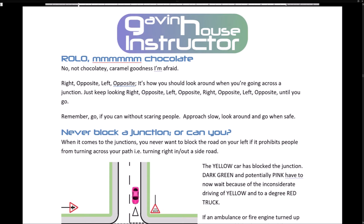ROLO — Right, Opposite, Left, Opposite. It's how you should look around when going across a junction. Just keep looking right, opposite, left, opposite, right, opposite, left, opposite until you go. Remember: go if you can without scaring people. Approach slow, look around, and go when safe.